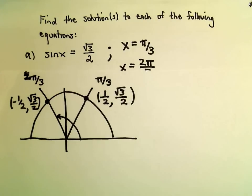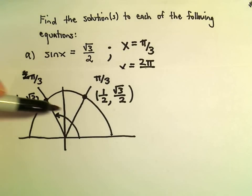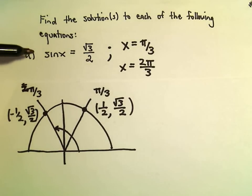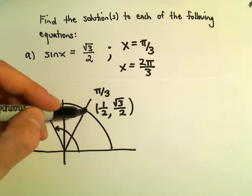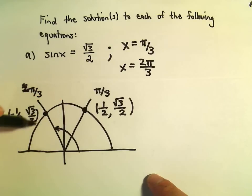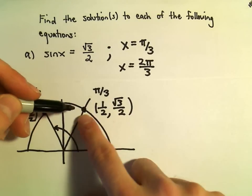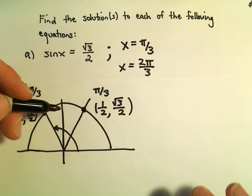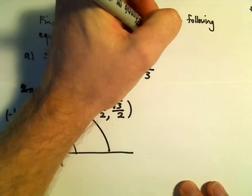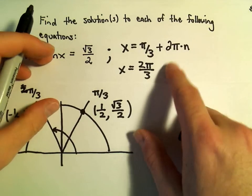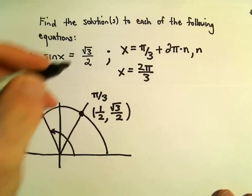And now certainly those aren't the only solutions. Those would be the only solutions between 0 and 2 pi, but we're not given any restrictions here really on the interval for x. So to me the idea is, since I'm at pi over 3, I can either add or subtract multiples of 2 pi. That'll put me at the same equivalent place on the unit circle. So we can simply add multiples of 2 pi by saying plus 2 pi times n, where n is an integer.